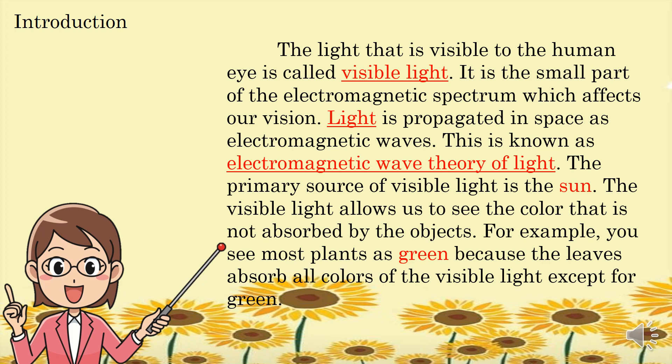The light that is visible to the human eye is called visible light. It is the small part of the electromagnetic spectrum which affects our vision. Light is propagated in space as electromagnetic waves. The primary source of visible light is the sun. Visible light allows us to see the color that is not absorbed by objects. For example, you see most plants as green because the leaves absorb all colors of the visible light except for green.